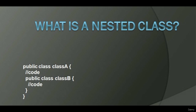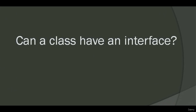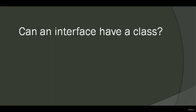What is a nested class? A class within another class is called a nested class. It logically groups similar classes together so that the inner classes can access all the members of the outer class as well. The syntax is: public class ClassA { public class ClassB { } }. Can a class have an interface? Yes, we can define an interface within a class; this is also called a nested interface. Can an interface have a class? Yes, of course. An interface can have a class which is static by default.